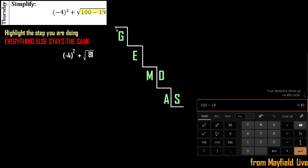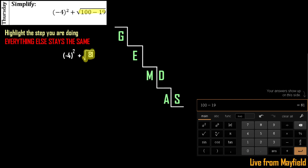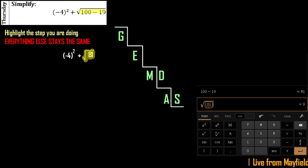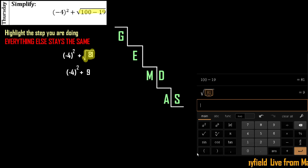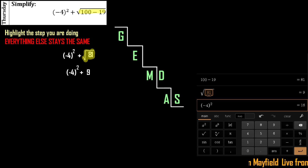Same idea — start that same staircase. We still have grouping symbols, so we're going to work inside. This time we're actually going to take the square root of 81, which is 9. Everything else stays the same: square root of 81 is 9, bring everything else down. Now we do negative 4 in parentheses — those parentheses make a huge difference — we want negative 4 times negative 4.